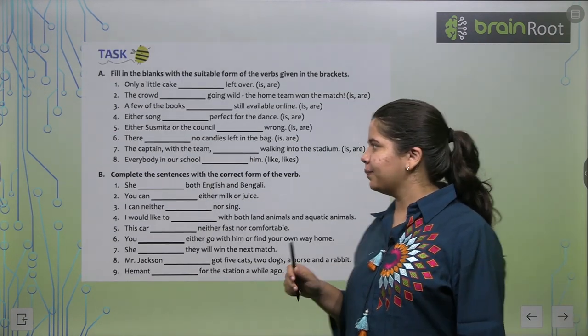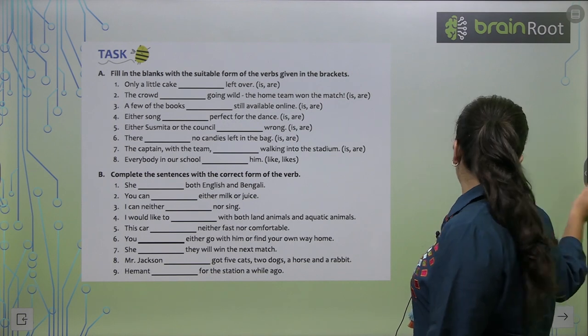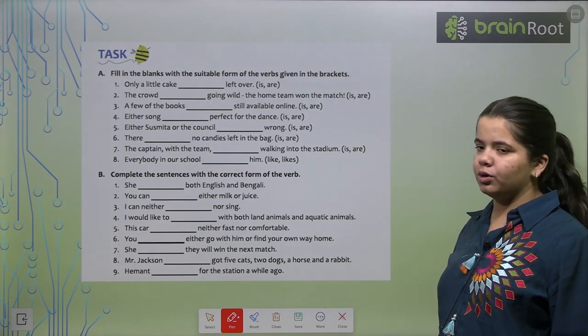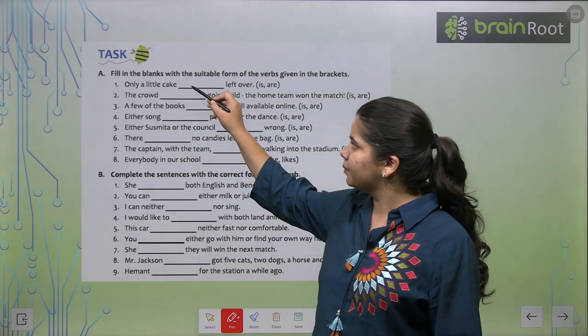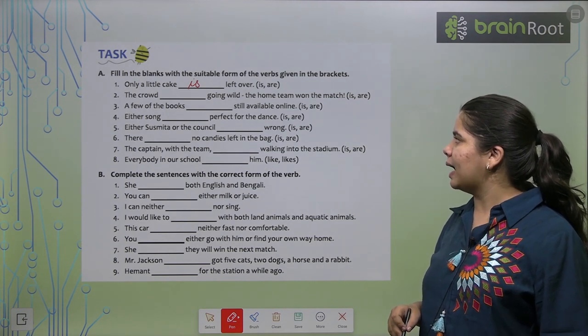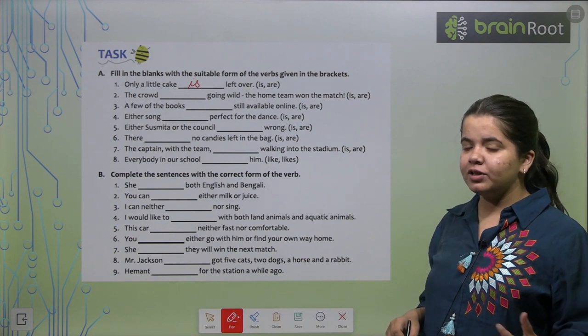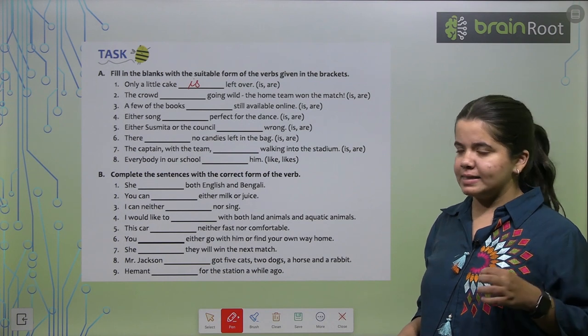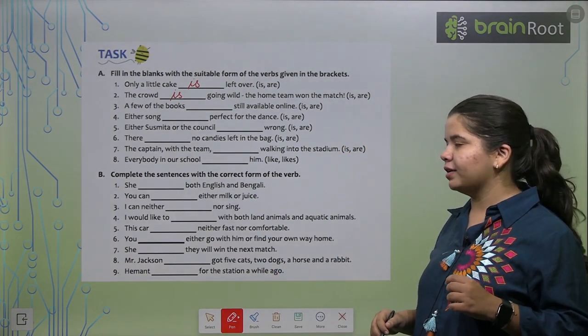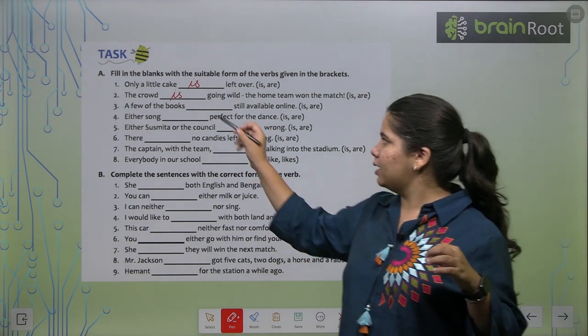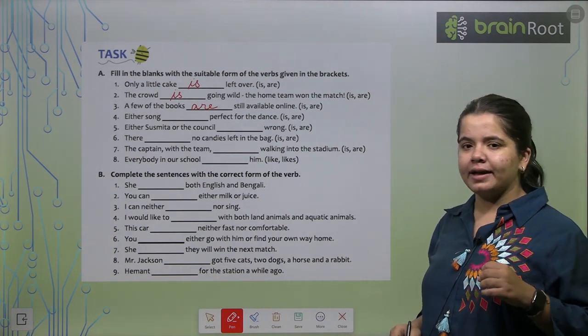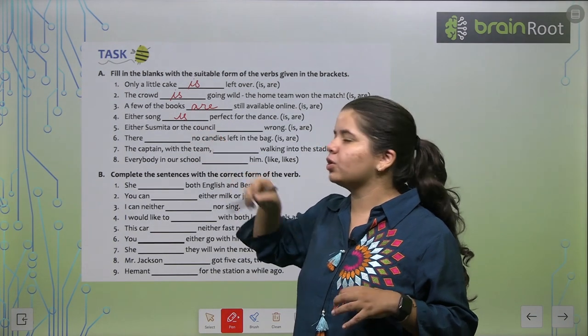Now, we have exercise. Let's try it. We'll do four together and rest four we're going to do in your homework. The first one. Only a little cake is left over. The crowd is going wild the home team won the match. Do you remember humne collective nouns ke saath kya padha tha? Yes, is. So, is will be your answer here. Third, a few of the books are still available online. Fourth, either song is perfect for the dance.